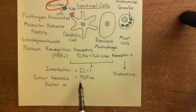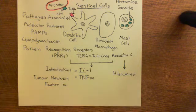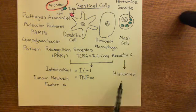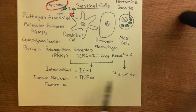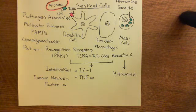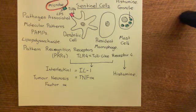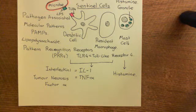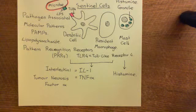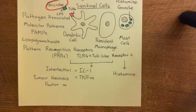They're going to send out interleukin-1 and tumor necrosis factor alpha in the case of the dendritic cells and resident macrophages, and if you're a mast cell, you'll just degranulate and release histamine. Now these three pro-inflammatory mediators are going to act on the endothelial cells of the blood vessels in this local area, and they're going to trigger the acute inflammatory response, which really is a response of the endothelial cells, because the endothelial cells are responsible for controlling what moves from the blood into the interstitial space. The acute inflammatory response is all about bringing troops from the blood into the interstitial space, and therefore it's all about endothelial cells.